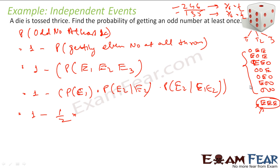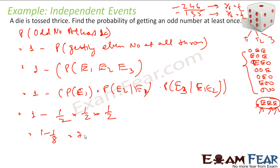The events E2 and E3 are all independent — logically also. When you throw a die, the probability of getting even on the second die is independent of what you got on the first die. So P(E2|E1) = 1/2 and P(E3|E1,E2) = 1/2. Since they are independent, this becomes 1 minus (1/2 × 1/2 × 1/2) = 1 minus 1/8 = 7/8.